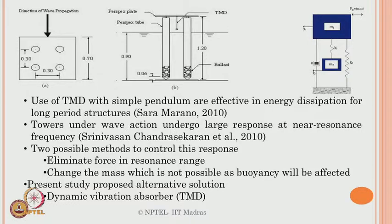If you are looking at the response control of the system at near-resonance frequency — which is generally attempted by researchers — towers under wave action undergo larger responses near resonance. It is always a good idea to attempt response control at the resonance of the excitation frequency. That is, ω̄ closer to ωn is a narrow band, and you attempt the tuning at that bandwidth. That is the recommendation researchers generally make if you want to achieve maximum response control.